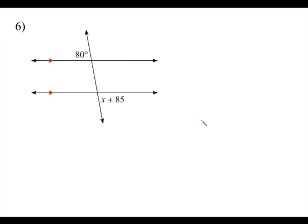Number six: this angle right here and this angle right here are alternate exterior angles. Alternate exterior angles are congruent when the lines are parallel. So we know 80 is going to equal x plus 85. If we minus 85 on both sides, that means x is going to equal negative 5.